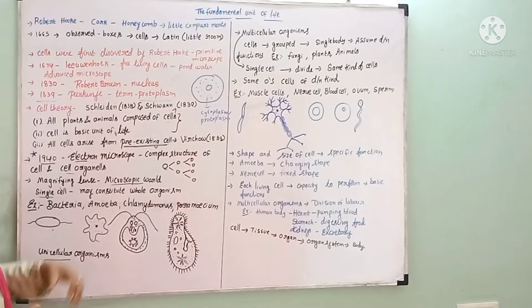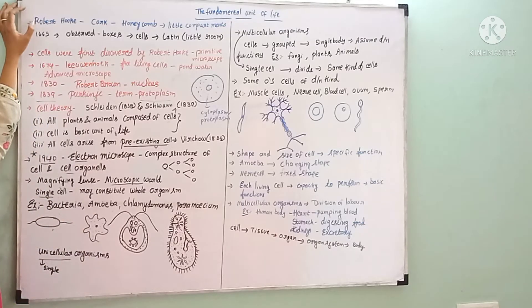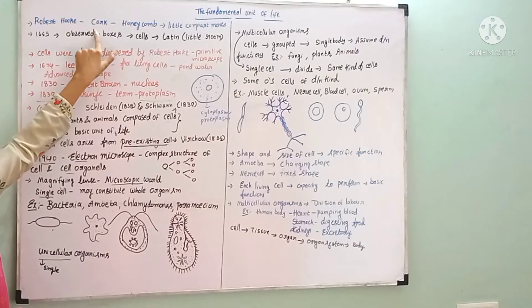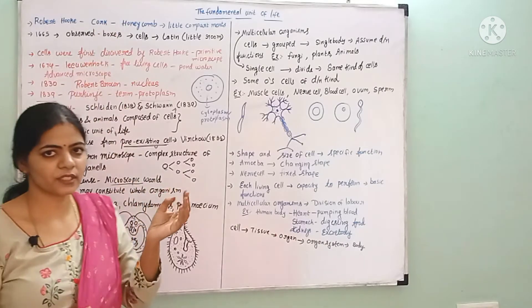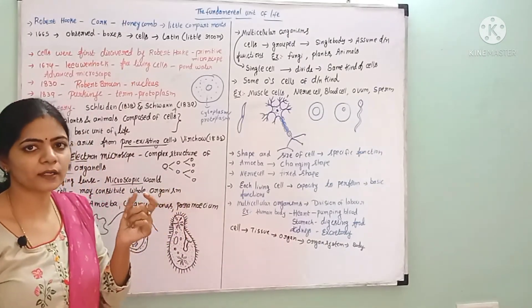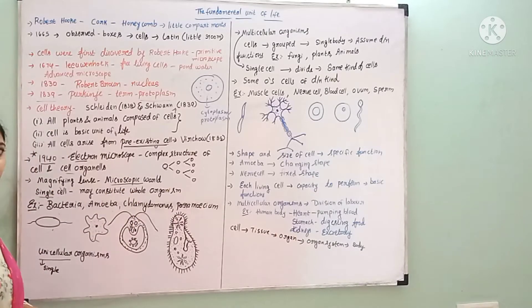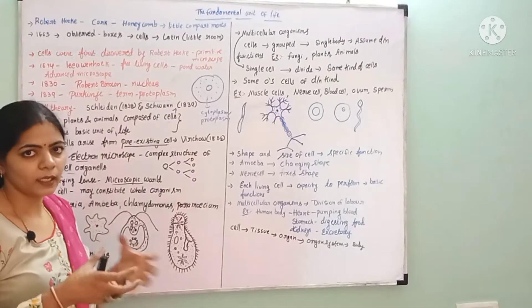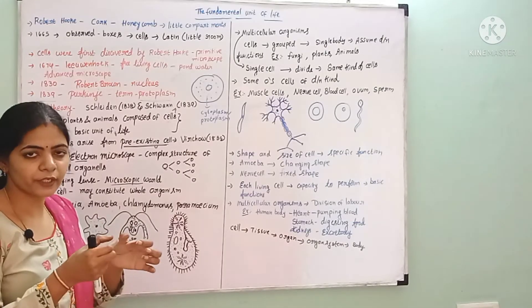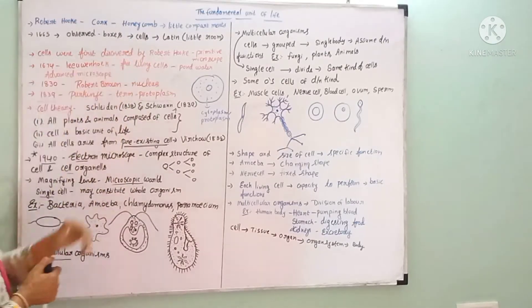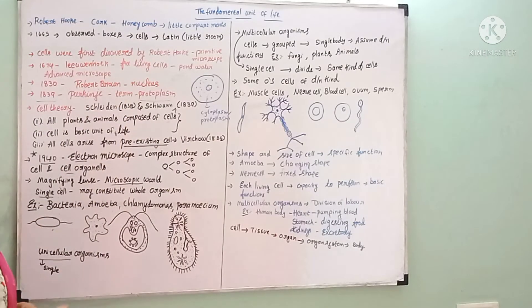The first one: the cell was first observed by Robert Hooke. He observed this under a microscope. The observed structure looked like a honeycomb, with different little rooms and compartments — all the little rooms in the cork.